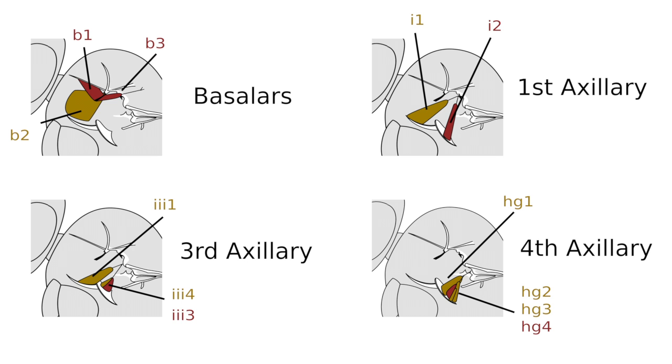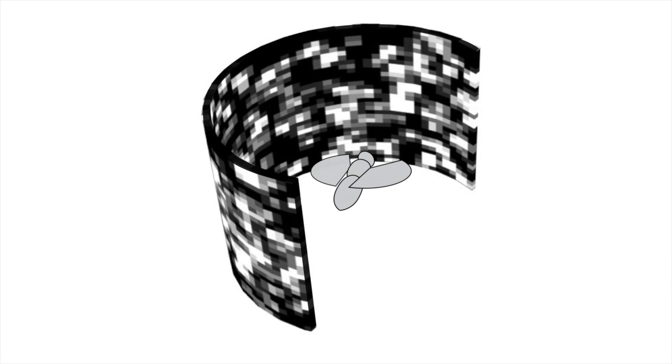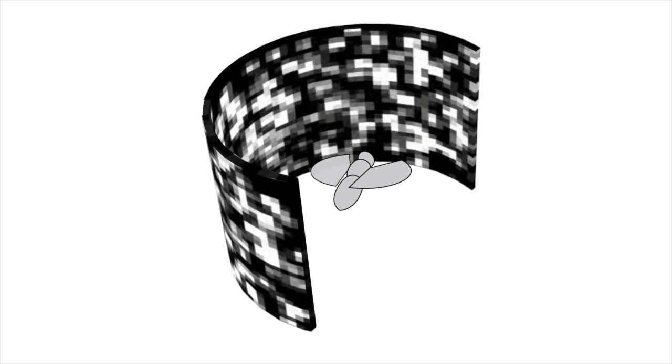To investigate the significance of this functional division, we presented visual motion to the flies, which would make them think they were rotating and thus elicit a compensating response. For instance, here we are presenting motion to the right, which simulates the fly rotating to the left.